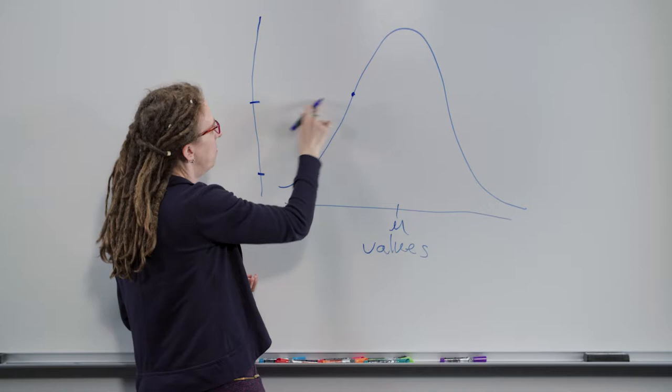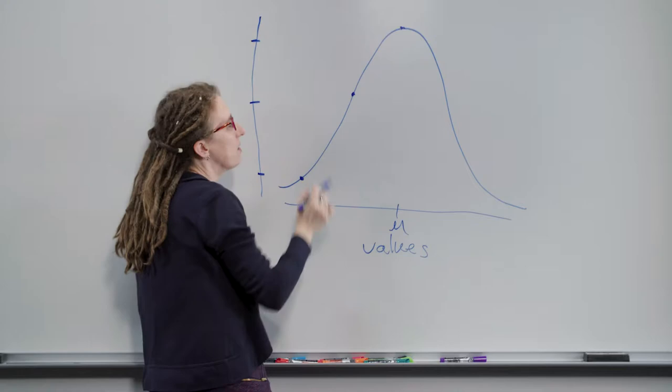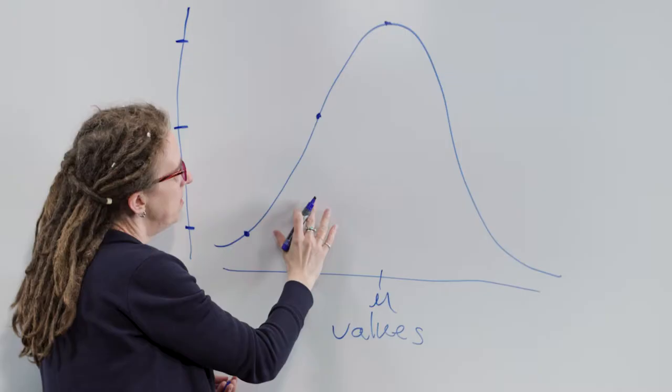And as we move closer to the mean value, the probability of seeing it or the likelihood of seeing it is higher. And the mean is the most likely value here in the middle of the distribution.